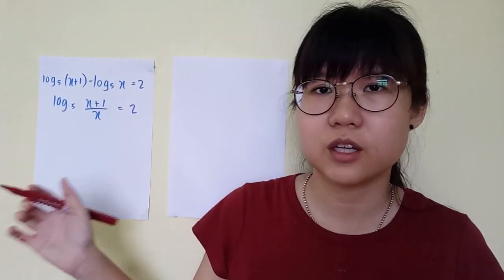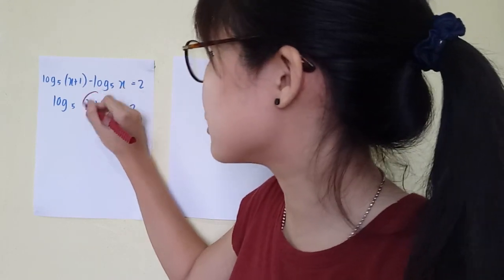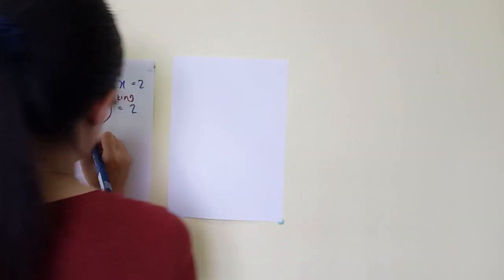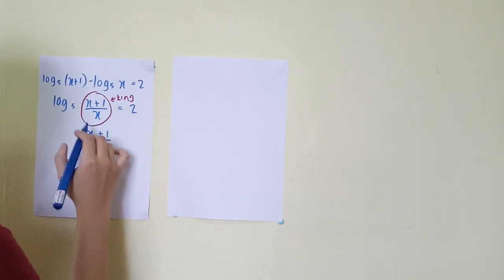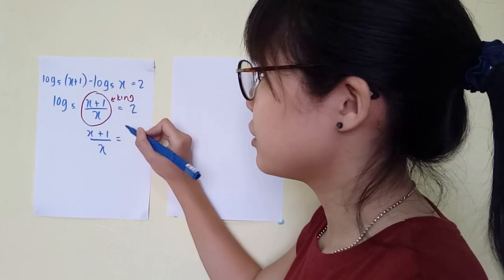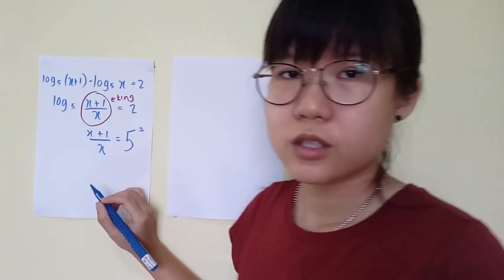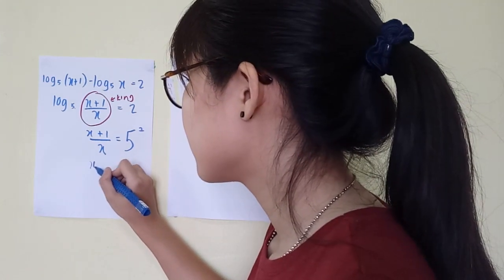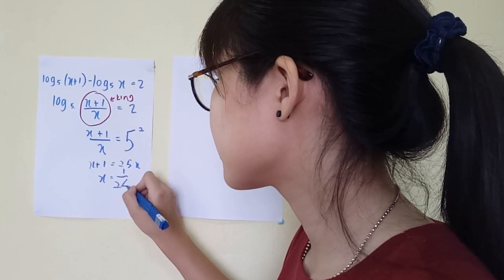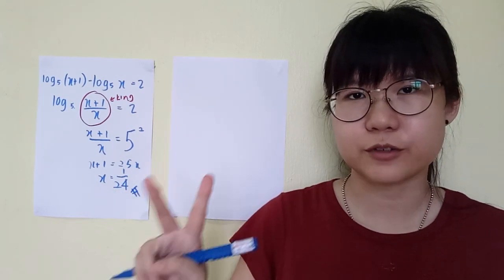At this step, use the definition of logarithm — the center one is the king and stays, the small base becomes the big number, and the big number becomes the exponent. So the base 5 becomes the big number and 2 becomes the exponent: (x+1)/x = 5² = 25. Solving this like a normal equation gives the answer x = 1/24.